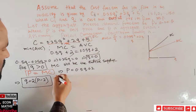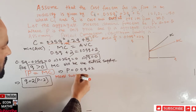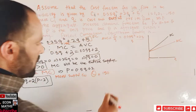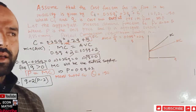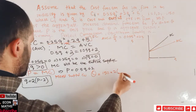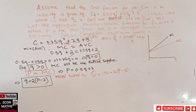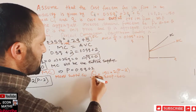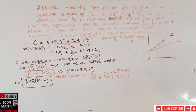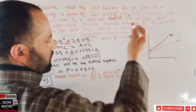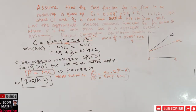The market supply curve is the sum of all individual supply curves. With 150 identical firms, total market supply is: Q = 150 × 2(P − 2) = 300P − 600. This is our market supply curve.